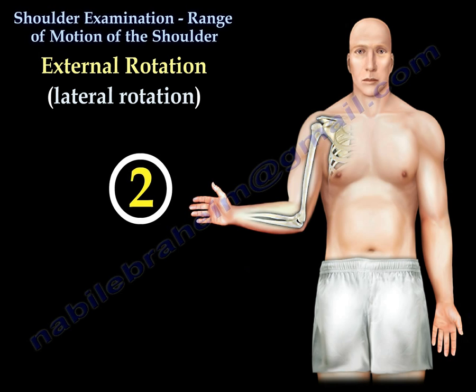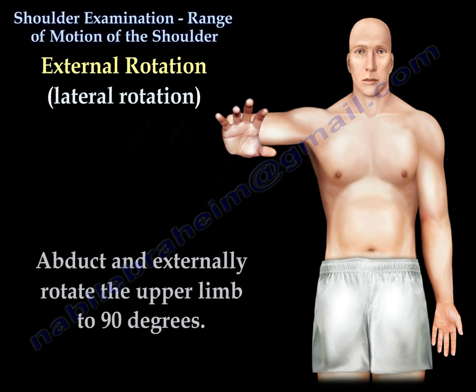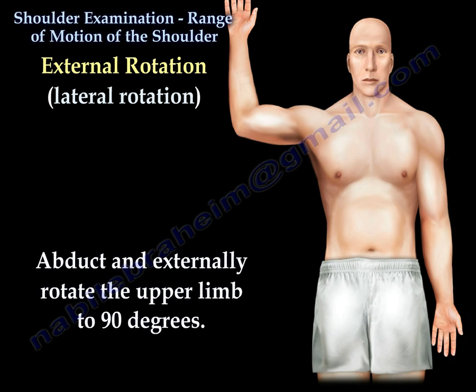The second way to check external rotation is to abduct and externally rotate the upper limb to 90 degrees.